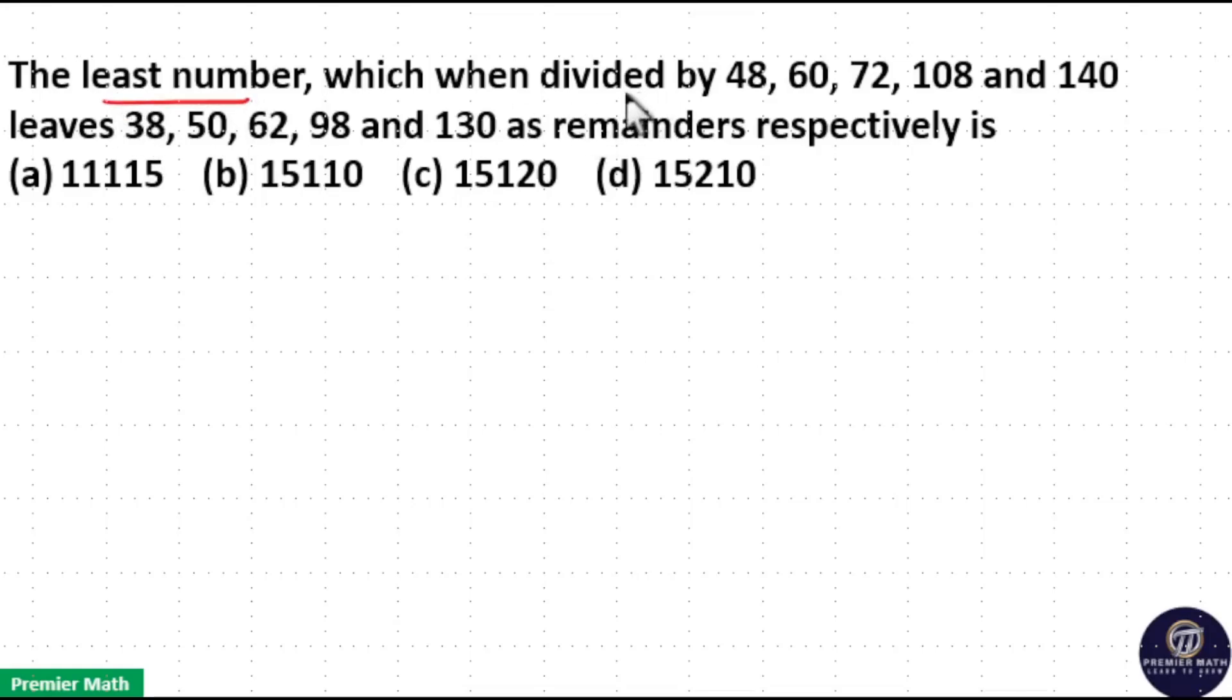The least number which when divided by 48, 60, 72, 108 and 140 leaves 38, 50, 62, 98 and 130 as remainders respectively is. Here you can use digital sum method. First I will explain the proper method.